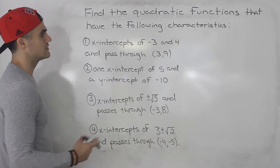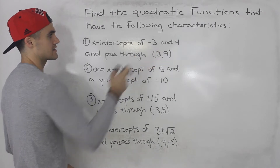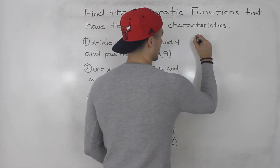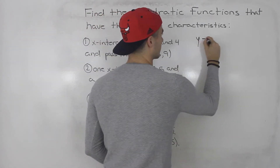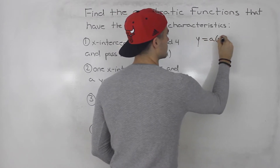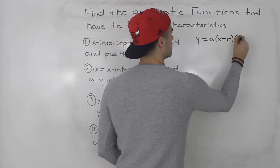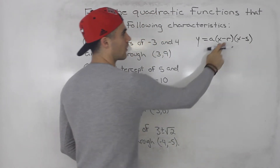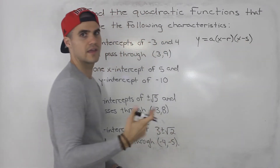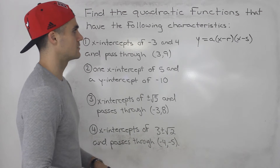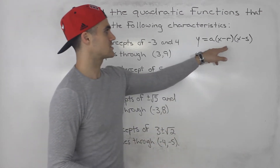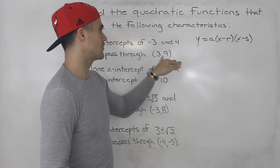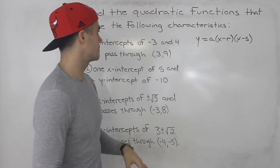With these types of questions, when they give you the x-intercepts, you usually want to put it in factored form. As a review, factored form is y = a(x - r)(x - s), where r and s are the x-intercepts. You plug in the x-intercepts for r and s, then solve for the a value by plugging in the point it passes through.